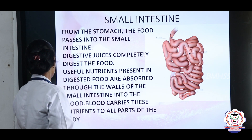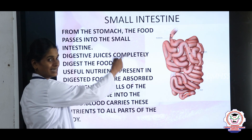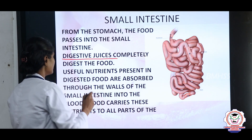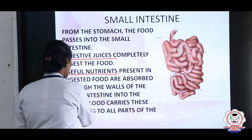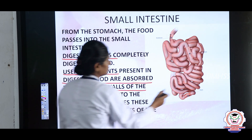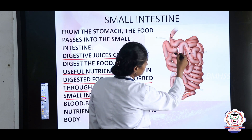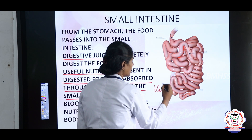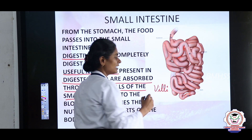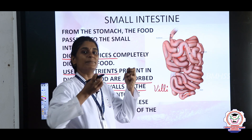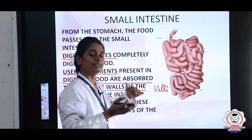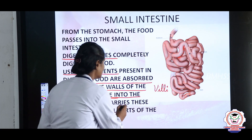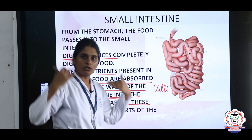After the stomach, the food reaches the small intestine, where digestive juices completely digest the food. Useful nutrients are then absorbed through the walls of the small intestine. Inside the walls of the small intestine, there are tiny structures called villi. These villi absorb the nutrients present in the food and pass them into the blood, which carries these nutrients to all parts of the body.